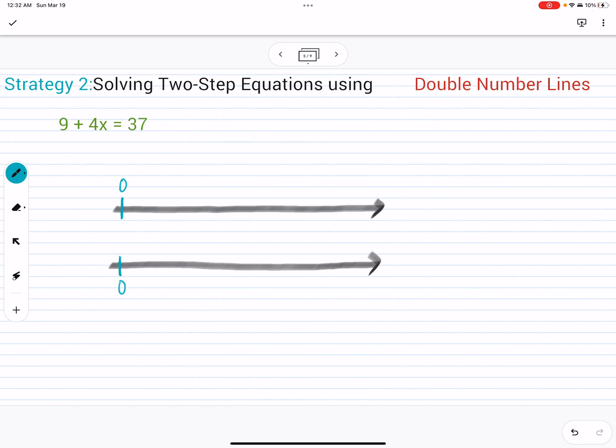Much like we saw in tape diagrams, I am going to go ahead and end my number line, one of my number lines, at the 37 mark. The reason why I'm doing that is because that is one side of my equal sign. So one line represents one side of my equal sign, while the other line represents the other side of my equal sign.